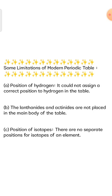Some limitations of the modern periodic table: First, the position of Hydrogen — it could not assign a correct position to hydrogen in the table. Second, the Lanthanides and Actinides are not placed in the main body of the table; they are placed separately. Third, there are no separate positions for isotopes of an element — no separate column or space is given for isotopes in the modern periodic table.